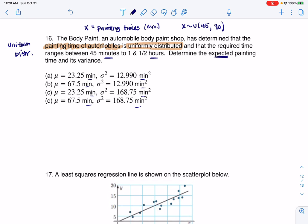And it says, what's the expected painting time? That's an equivalent buzzword for mean or average. And then variance is going to be the square of the standard deviation. So I'll find all of those.